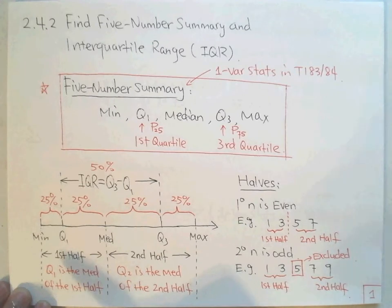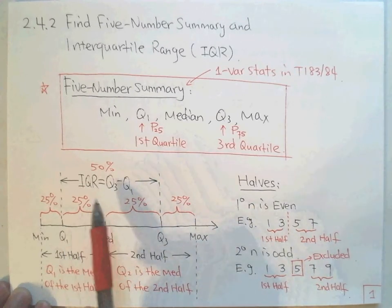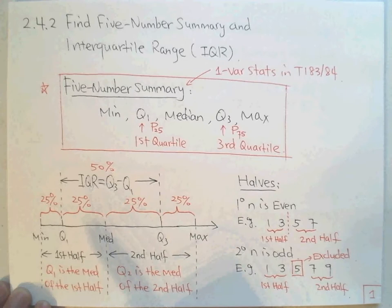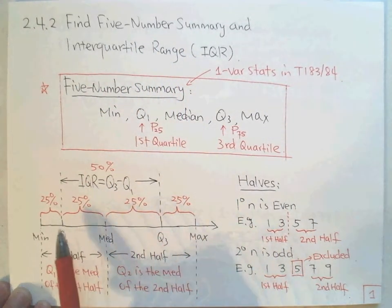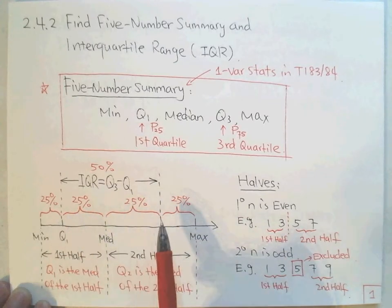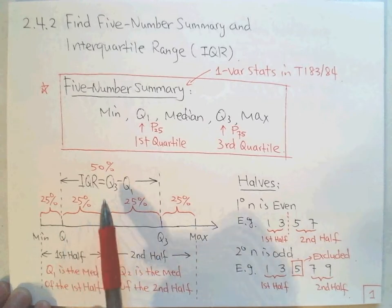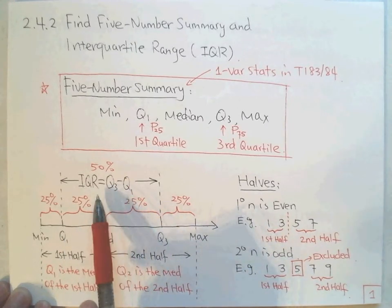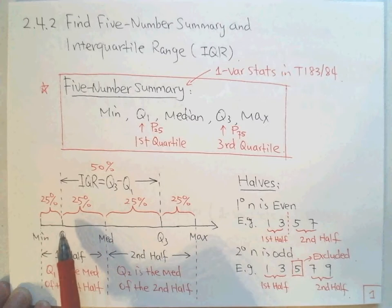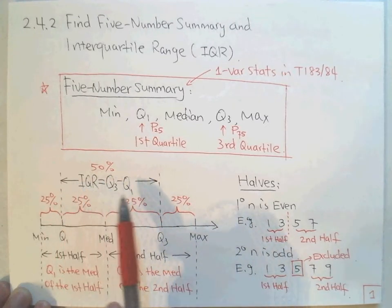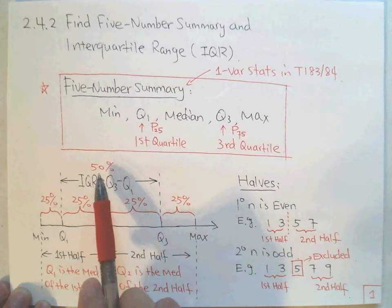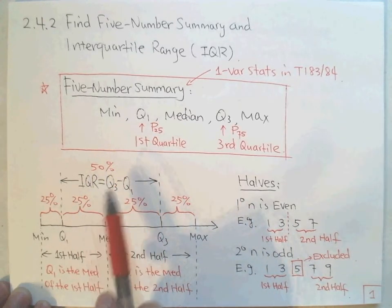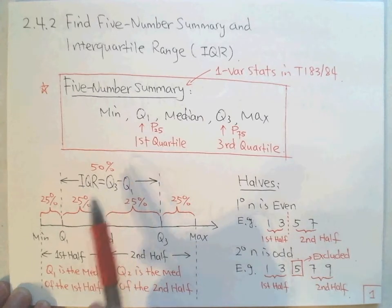IQR stands for interquartile range. It is the distance from Q1 to Q3, calculated as Q3 minus Q1. The IQR covers 25% plus 25%, which is 50% of the data — specifically the middle 50% of the data.